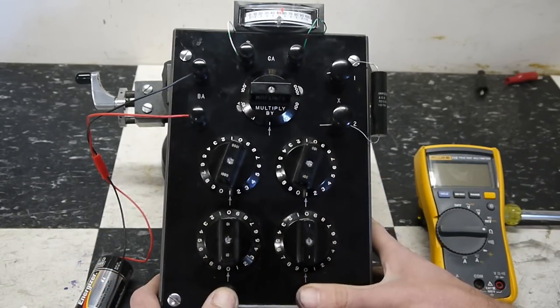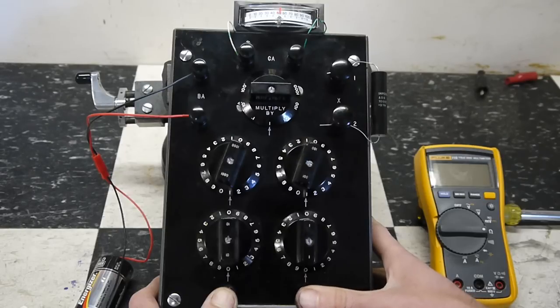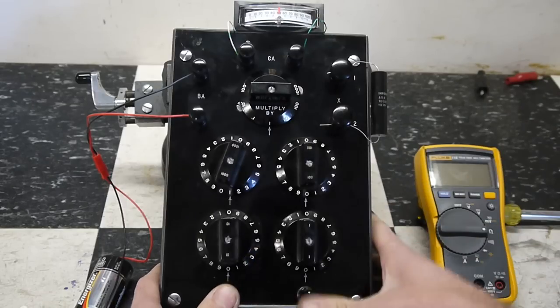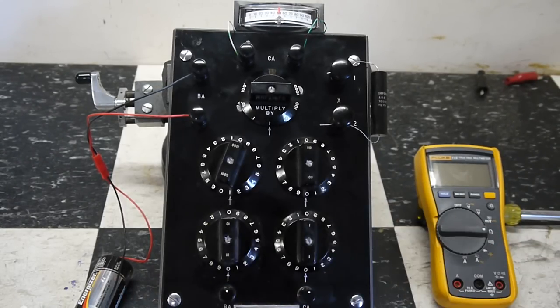And now, you see the galvo is just barely moving. Maybe 7 microamps. So, that means we're close. And now, when I press the button, the galvo is not moving at all. Which means we have found the value.